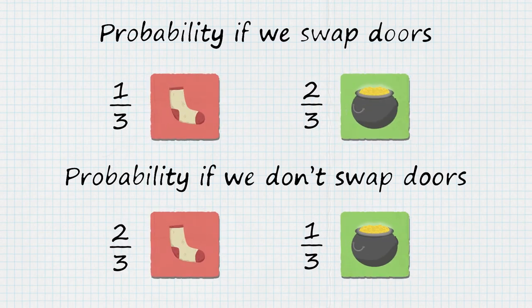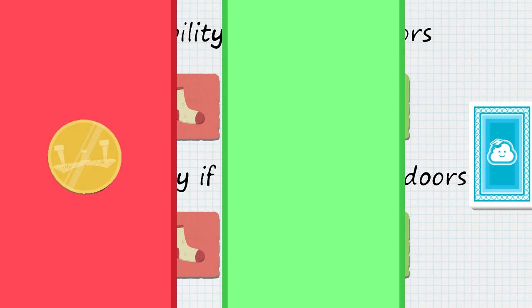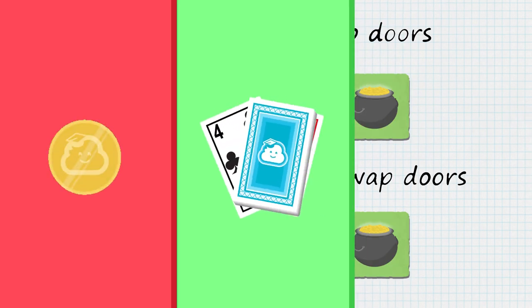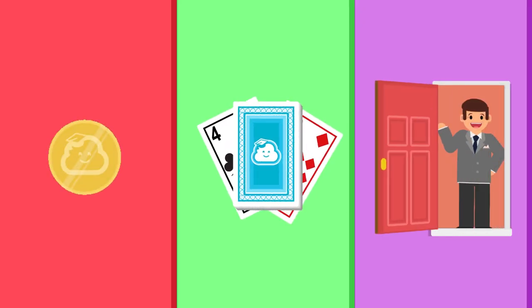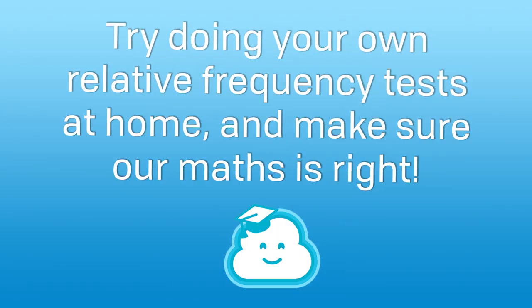This can be tricky to make sense of, but it shows us that probability isn't always what you'd expect — whether it's a coin toss, drawing cards, or a game show. Understanding probability can help us predict what will happen, but it's never a sure thing. All these examples can be tested by running your own relative frequency tests at home, so why don't you give it a go and make sure our maths is right.